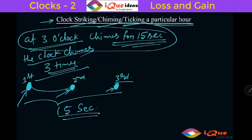Look at how many gaps are there. So if there are 3 strokes there will be 2 gaps. So 1 gap and 1 gap. Now the total duration of 2 gaps, that is 15 seconds. This means 1 gap is equal to 7.5 seconds.